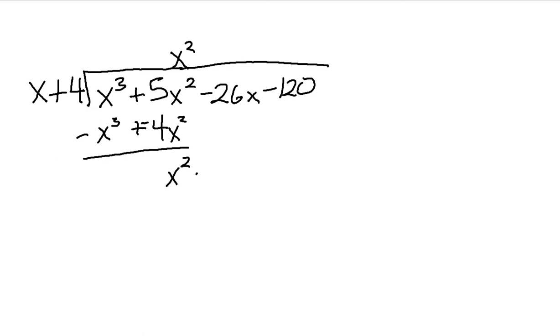And here I have, I'm going to pull down this negative 26X. And I need to figure out what times X gives me X squared. Well, that's simple enough. That's just going to be X. X times X gives me X squared. X times 4 gives me 4X. And now I change the signs on the bottom. X squared minus X squared gives me 0, which is good. That's what I wanted. 26X minus 4X gives me negative 30X.